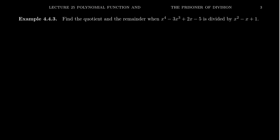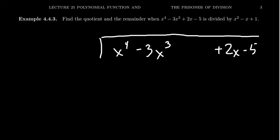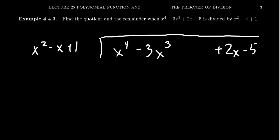Let's look at another example. We want to find the quotient of x to the 4th minus 3x cubed plus 2x minus 5 divided by x squared minus x plus 1. Notice in the dividend there's no quadratic term — I'm going to leave a space open for that. So we have x to the 4th minus 3x cubed, then a gap, then 2x minus 5, divided by x squared minus x plus 1. We start: x to the 4th divided by x squared gives us x squared, which I record in the x squared column — good thing I left that gap.